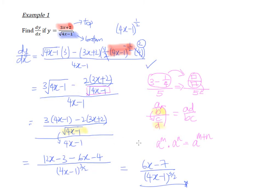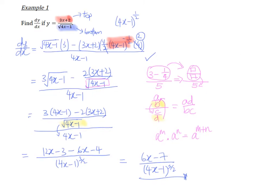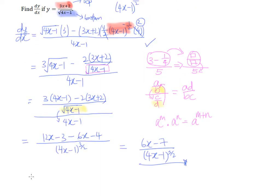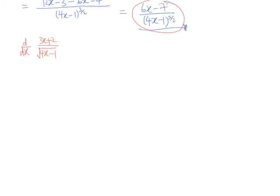That is the answer using the quotient rule for this question. Now let me show you another alternative — using the product rule to solve a question like this. The question is to differentiate 3x plus 2 over the square root of 4x minus 1. The first step is to rewrite this as a product before we apply the product rule. This isn't something difficult; we end up with 3x plus 2 multiplied by 4x minus 1 to the power of negative half.